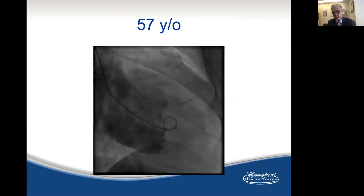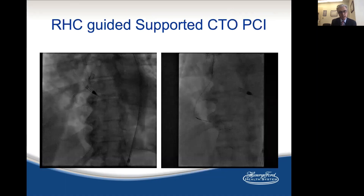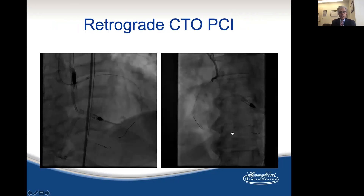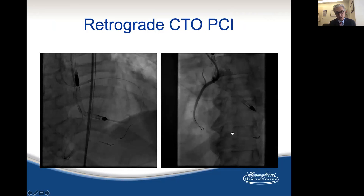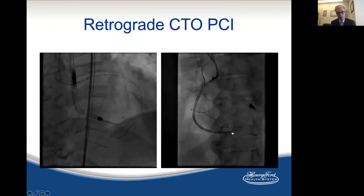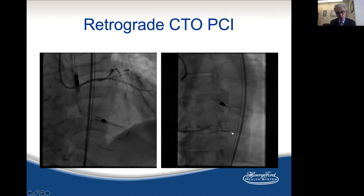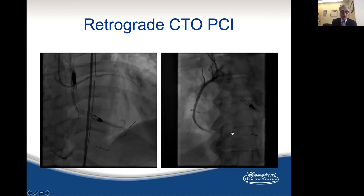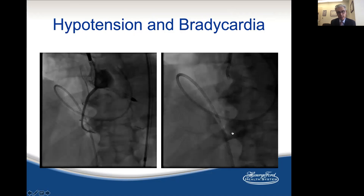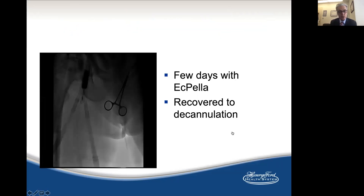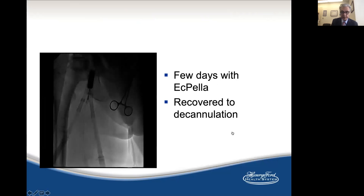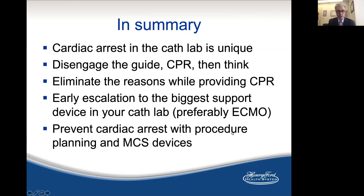Here is an example: a 57-year-old gentleman with an EF of about 20%, RCA CTO for PCI. We ended up having to go retrograde with this patient. We opened the RCA and stented it, and the patient started having low blood pressure and bradycardia. Even before we started, we had done a right heart catheterization and found that his cardiac index was borderline. Because we wanted to go retrograde, we used the Impella — but obviously, Impella was not enough. We placed another right heart catheterization and the cardiac index was about 1. We escalated immediately to ECMO and left the Impella for venting. The patient recovered and sent me a note to apologize for the trouble he caused in our cath lab.